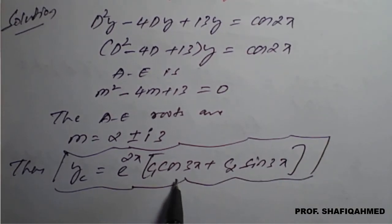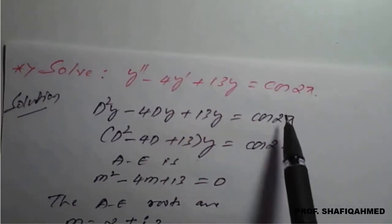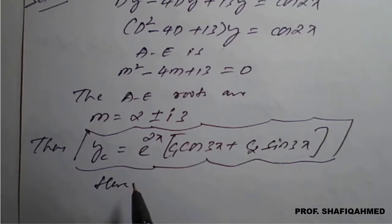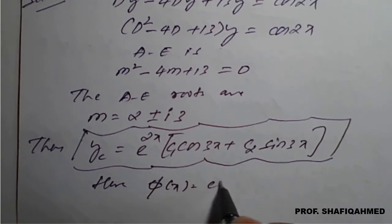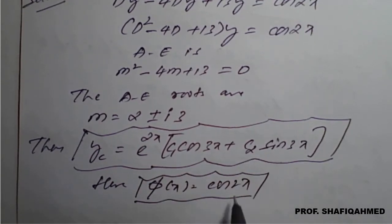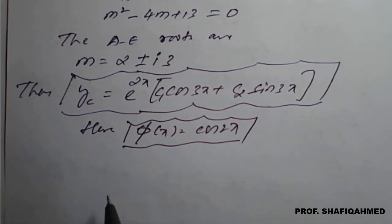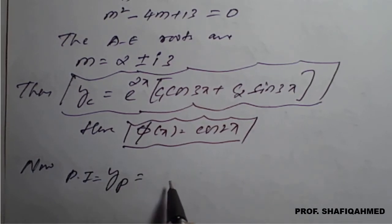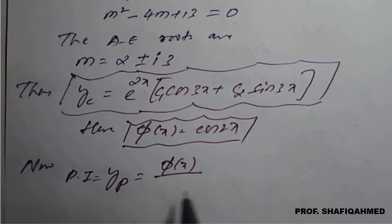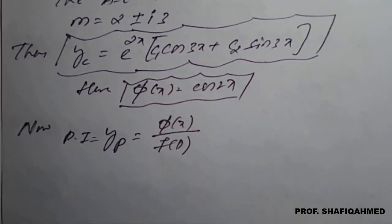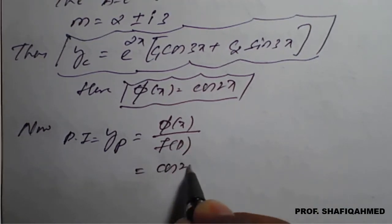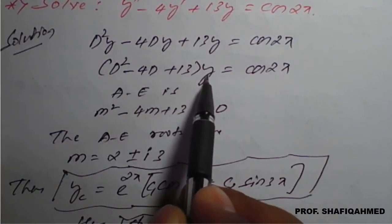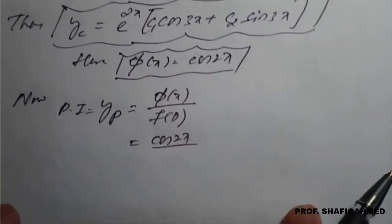With the complementary function found, we now address the non-homogeneous part. Here phi of x equals cos of 2x, which is the right hand side value. With this phi of x we can find the particular integral. The particular integral yp is equal to phi of x divided by f of d, where phi of x is cos of 2x and f of d is d squared minus 4d plus 13.